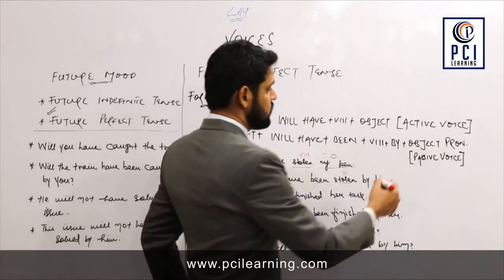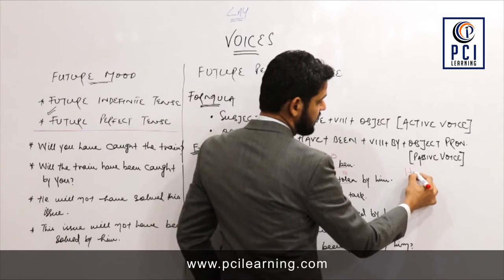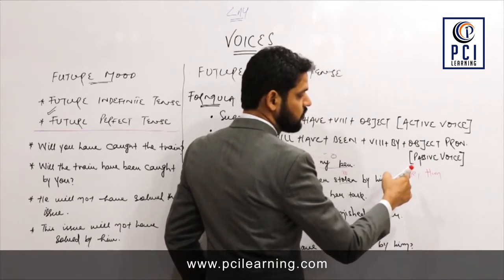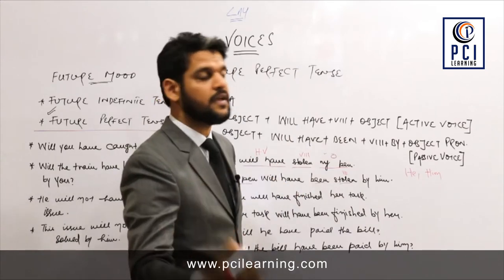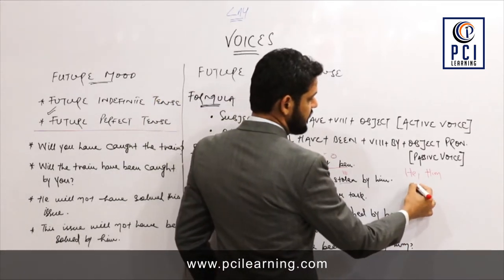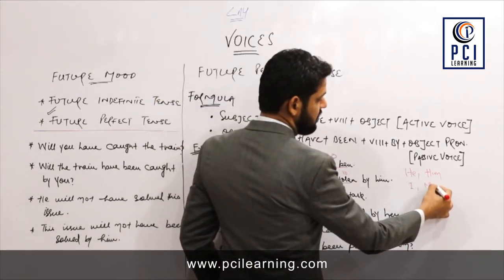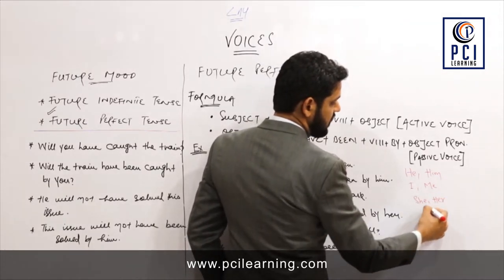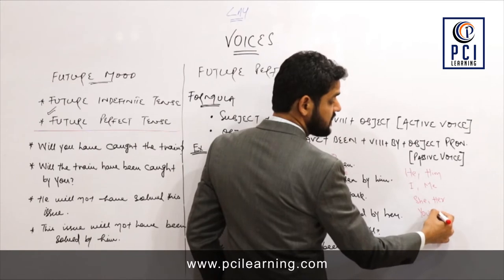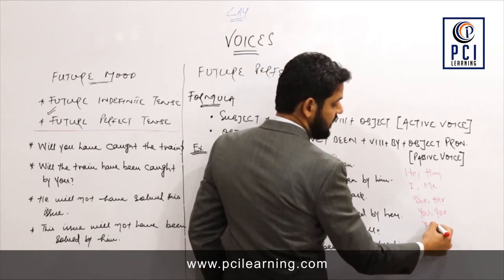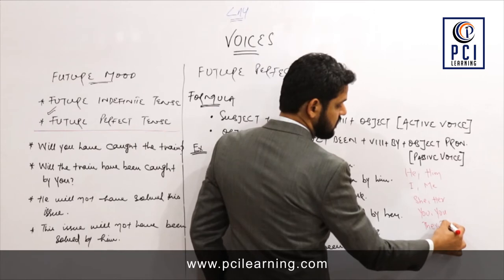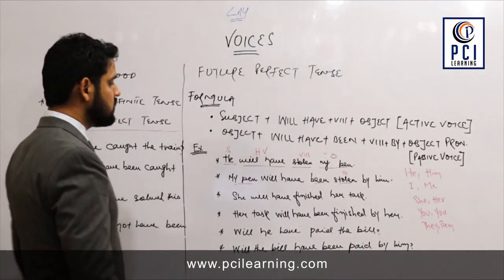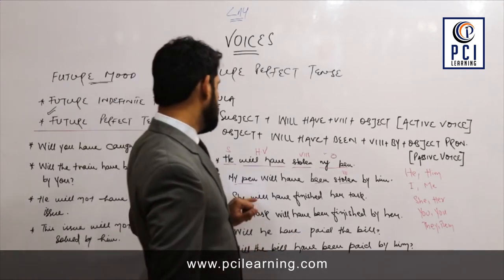Keep this pronoun table in mind: 'he' is a subject pronoun and will change to object pronoun 'him'. Similarly, 'I' becomes 'me', 'she' becomes 'her', 'you' stays as 'you', and 'they' becomes 'them'. Moving towards the next example.